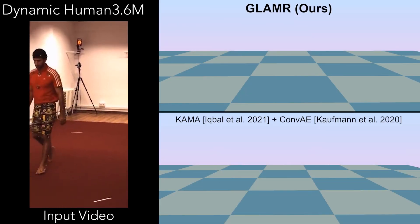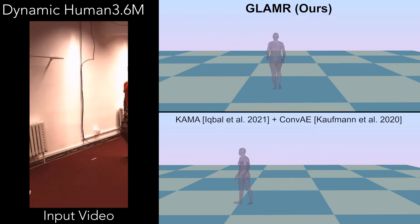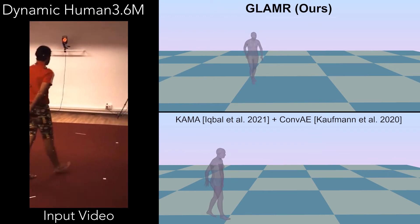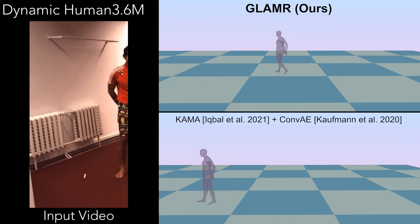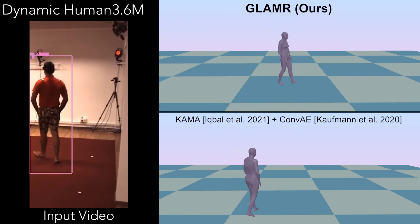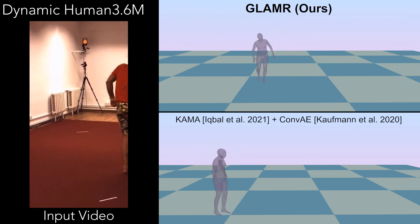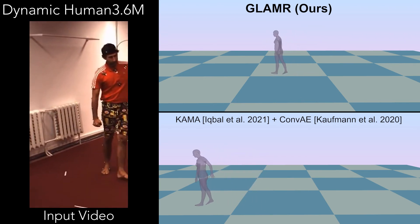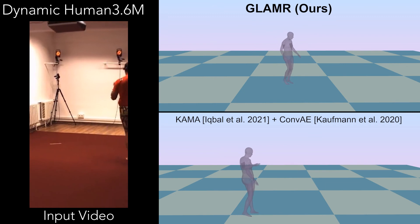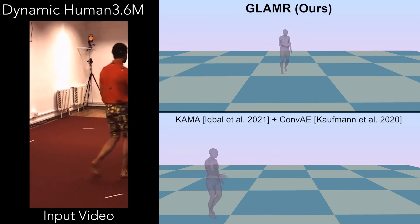Next, we will show results on the Dynamic Human 3.6 million dataset. Dynamic Human 3.6 million is synthesized from the Human 3.6 million dataset to evaluate global human pose estimation from dynamic cameras. We crop the video with a small window and oscillate the window around the person, back and forth, to simulate dynamic cameras and occlusions. We will publicly release the code for synthesizing the dataset. We can see that our approach, GLAMR, outputs very natural walking motions for occluded frames, while the baseline fails to do so.